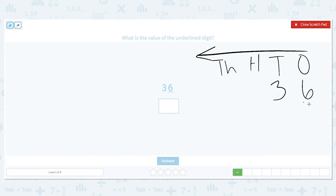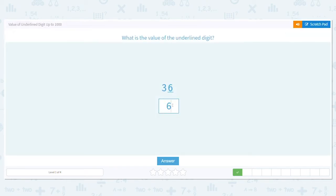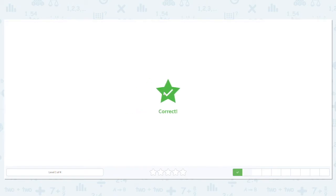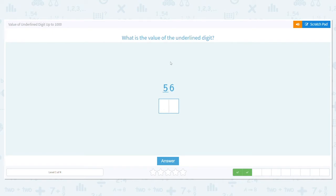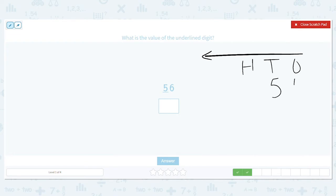What is the value of the underlined digit here? 56, but this time the five is underlined. So ones, tens, hundreds. Fifty-six. Do we really care about the ones? No, we're in the tens right now. So this is saying I have five tens.